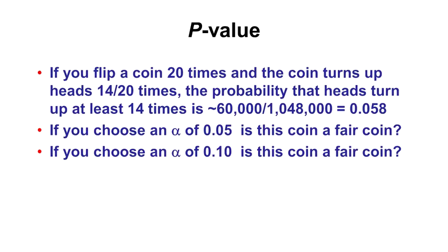Another example: flip a coin 20 times and get 14 heads—the probability is 0.058. With an alpha of 0.05, you'd say it's a fair coin, but with an alpha of 0.1, you'd determine it's not fair. The choice of alpha is somewhat arbitrary. Statisticians tend to be relaxed about which alpha they choose, but people outside statistics are often incredibly rigid about 0.05 with no justification—it's just a convenient number associated with the two-standard-deviation rule.